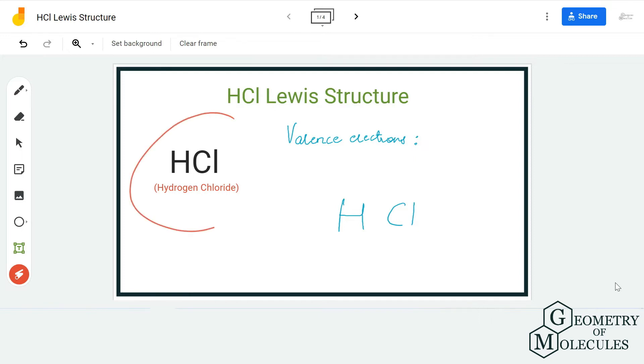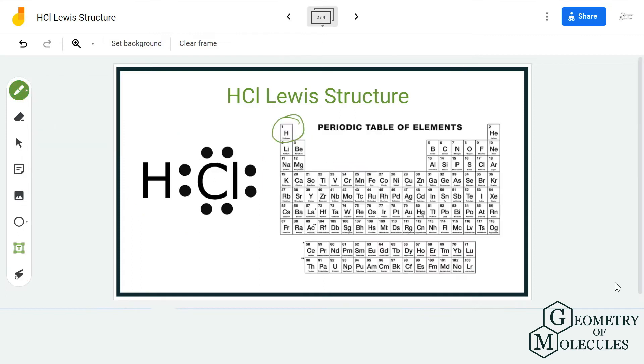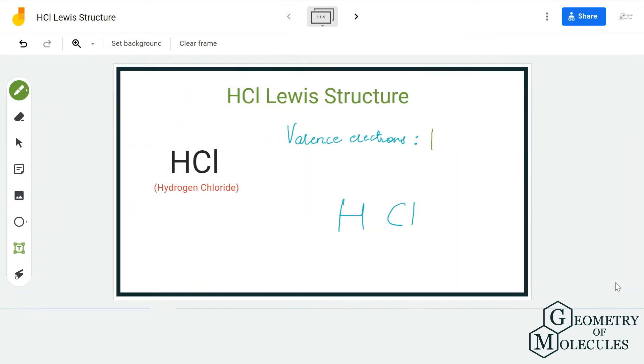Hydrogen is a group one element as you can see over here and it has one valence electron in its outer shell. Chlorine is a group seven element over here and it has seven valence electrons in its outer shell. So in total we have eight valence electrons for this molecule.